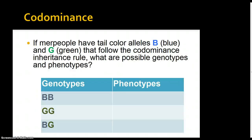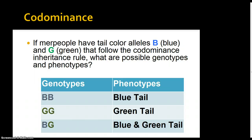Here's a Harry Potter example for codominance. If merpeople have tail color alleles B for blue and G for green that follow codominance inheritance, the phenotypes would be: two B alleles gives a blue tail, two G alleles gives a green tail. But if we have both B and G, we get a blue and green tail — both are expressed in the phenotype. It's not a mix or a blend, but we actually see both of them.